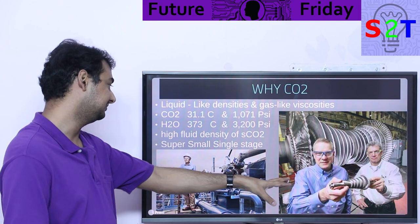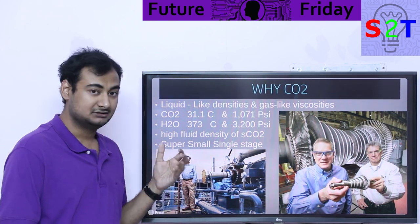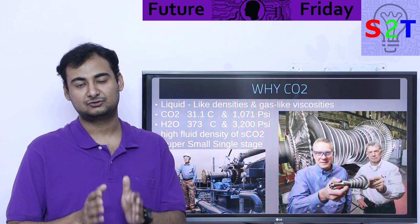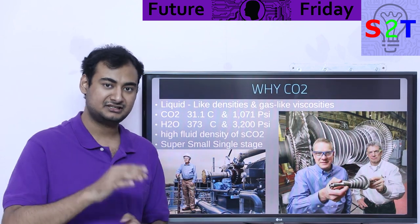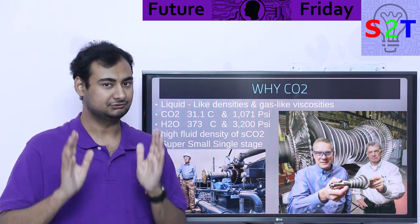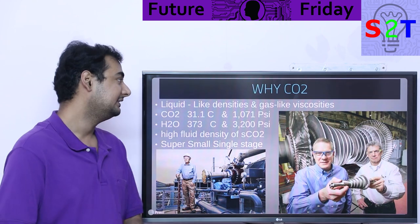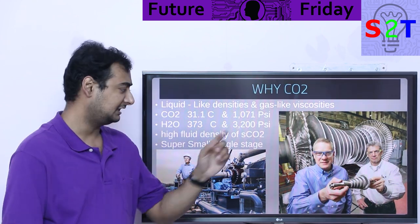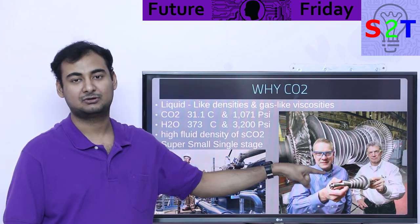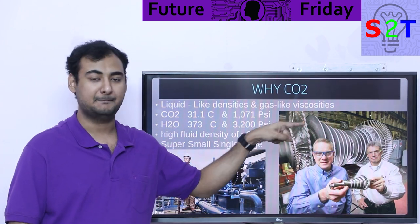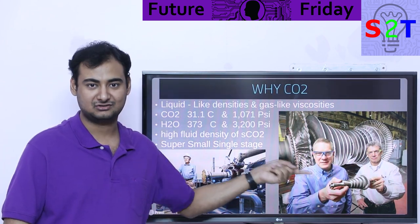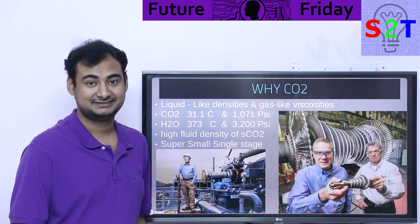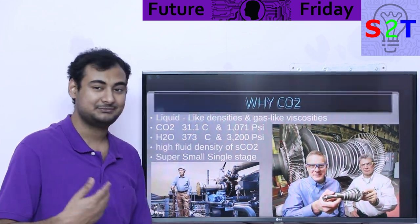CO2 turbines also work on a single stage, whereas steam systems generally have three stages. With CO2, one stage is all you need — that's it. So that is very attractive. Imagine being told that this small thing is capable of producing 10 megawatts of rotational torque. That's the reality, and that's why people are looking into carbon dioxide.